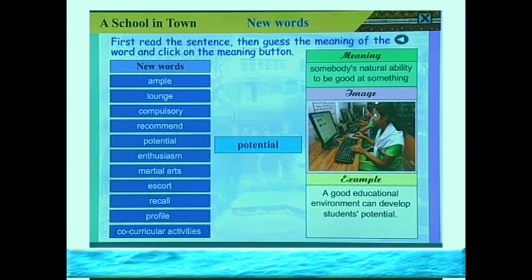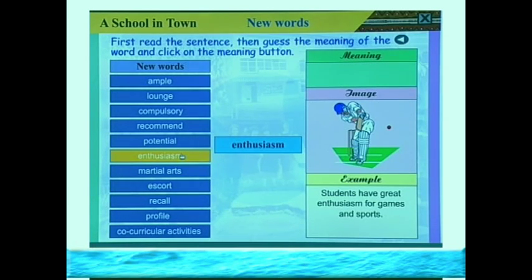Every student will not be good at study, but every student has some ability — in different areas. Some students are good at education, some at sports, some at art, culture, singing, or dancing. So every student has some potential — this is the reality. We have to find out our potential to be successful in life. The next word is 'enthusiasm.' Example: Students have great enthusiasm for games and sports. Enthusiasm means a strong feeling of interest — a strong attraction toward something.